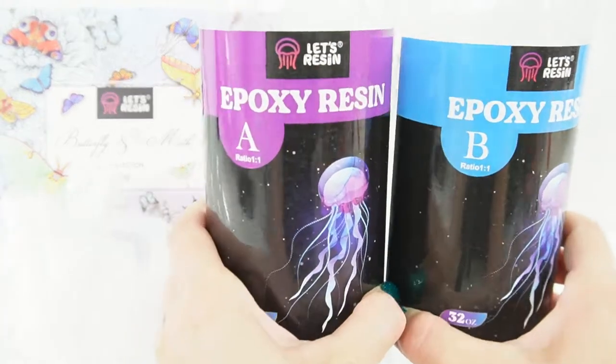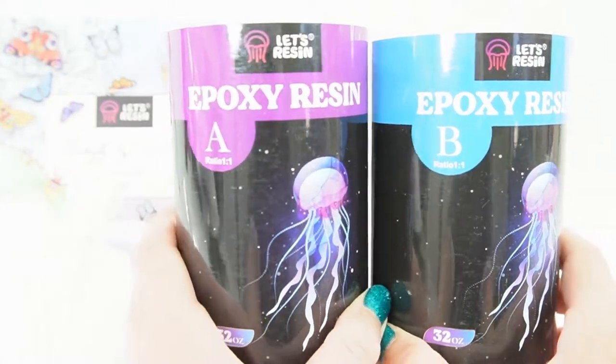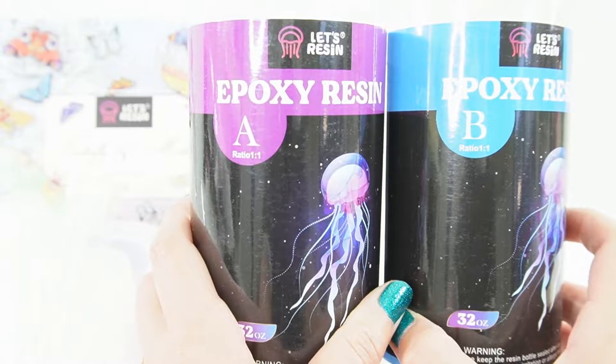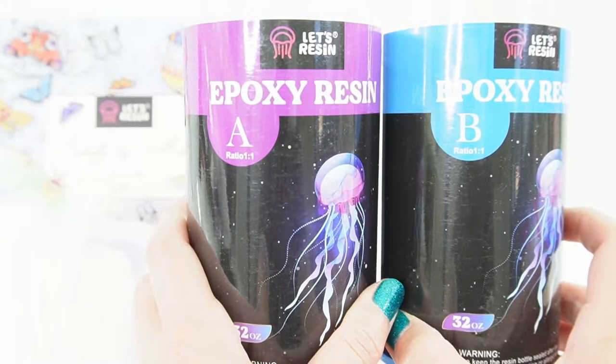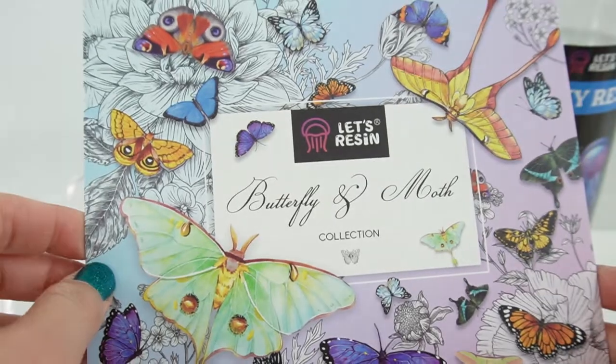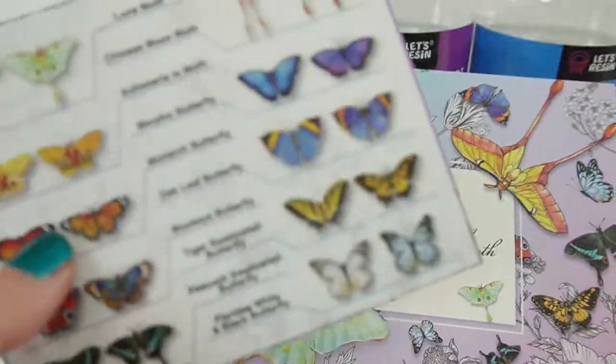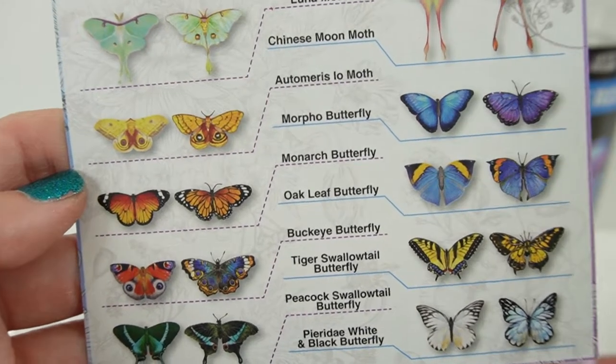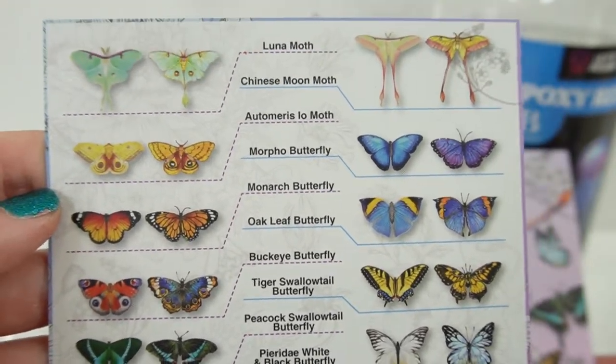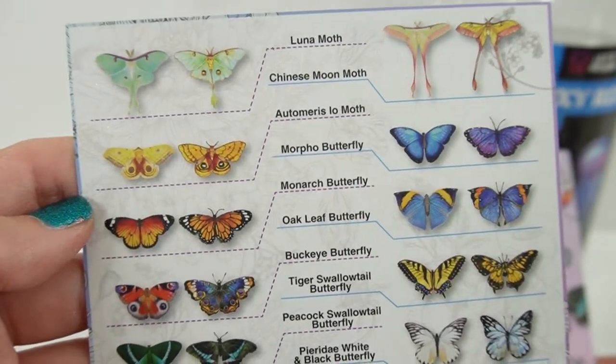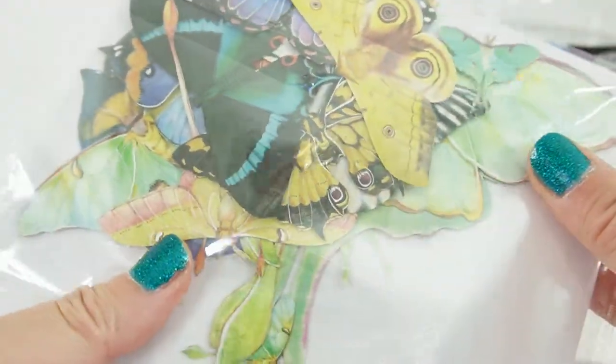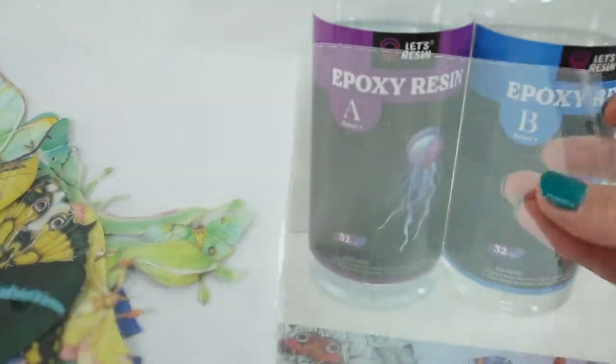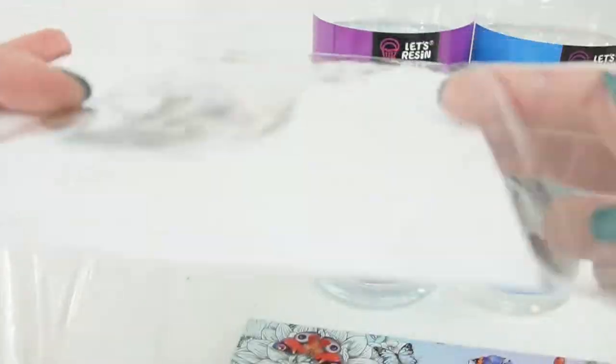We're going to be using epoxy resin from Let's Resin. This one comes in two parts, Part A and Part B. I'm going to mix it to a ratio of one-to-one. We're also going to be using the butterfly and moth collection. This set comes with ten different types of butterflies and moths. Here they are. As you can see, they are absolutely beautiful. They come in various sizes ranging from one inch to about six inches. Today we're going to be using the small ones.